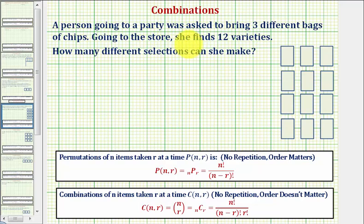So there are twelve varieties of chips at the store, and she's taking three of them at a time. Whenever we have a situation like this where we have N items, in this case twelve varieties, and we're taking R at a time, in this case three at a time,